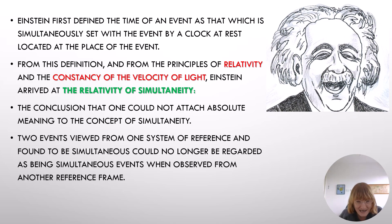Einstein first defined the time of an event as that which is simultaneously set with the event by a clock located at the place of the event. From this definition and from the principles of relativity and the constancy of the velocity of light, Einstein arrived at the relativity of simultaneity, that is, the conclusion that one could not attach absolute meaning to the concept of simultaneity. Two events viewed from one system of reference and found to be simultaneous could no longer be regarded as being simultaneous events when observed from another reference frame.